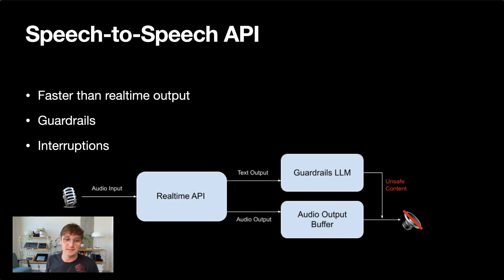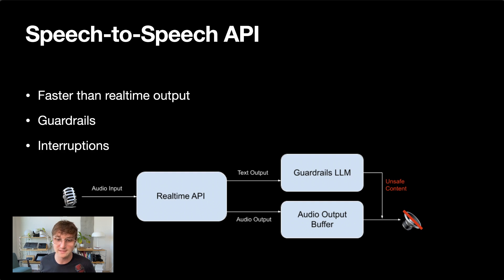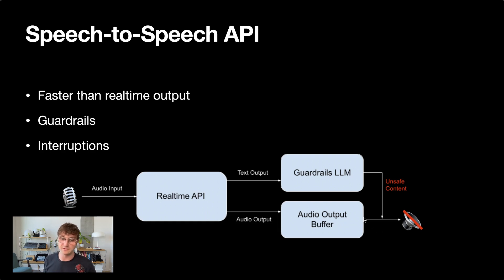The other interesting thing is that you are able to interrupt the model, essentially because it's generating the response so fast. When you interrupt the model, voice activity detection detects that you're speaking again. You can use that to clear or mute the output buffer so that the user can speak again, and the system can respond to the new information they've sent in.